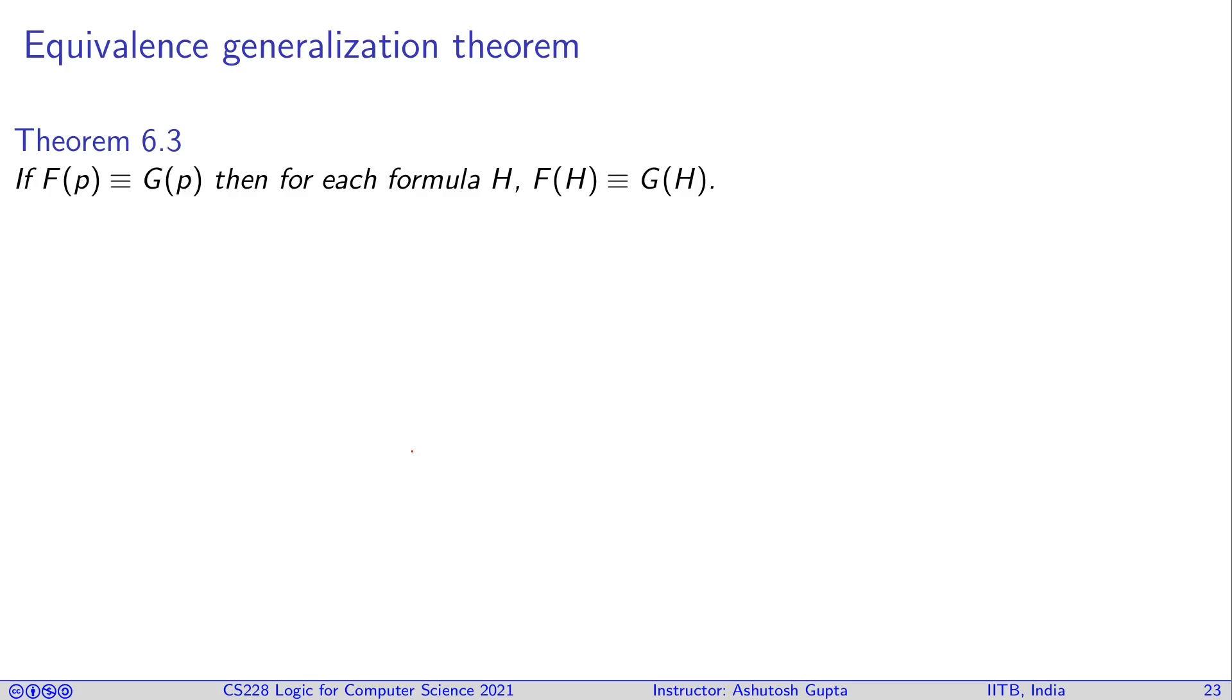Let's prove another theorem for substitution. This theorem says that if F(p) is equivalent to G(p), then for each formula H, I can say F(H) is equivalent to G(H). We will see why this theorem is useful, but first try to prove it using Theorem 6.2 which we just proved. Without loss of generality, assume p does not appear in H. It's food for thought—why would it go wrong if it appears and why am I saying without loss of generality? Please try to work it out.